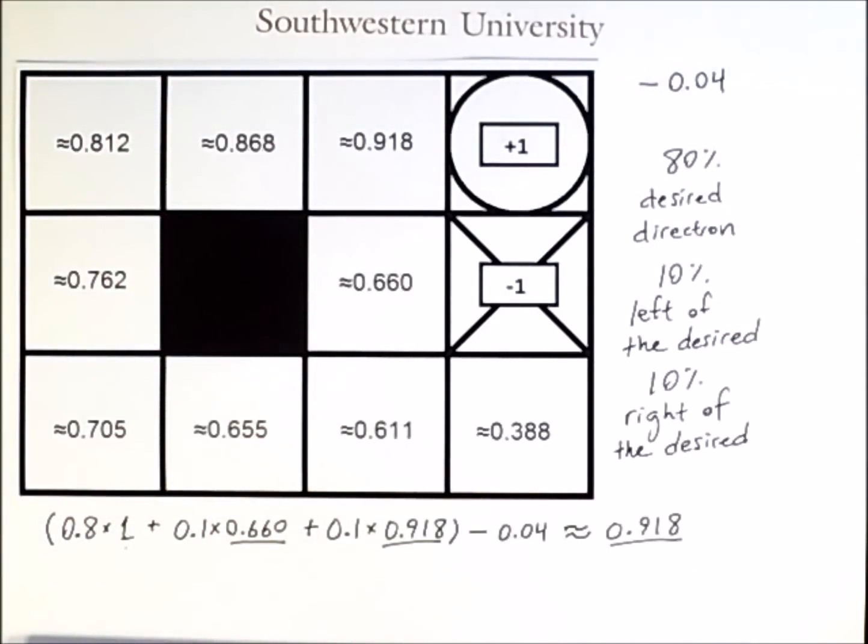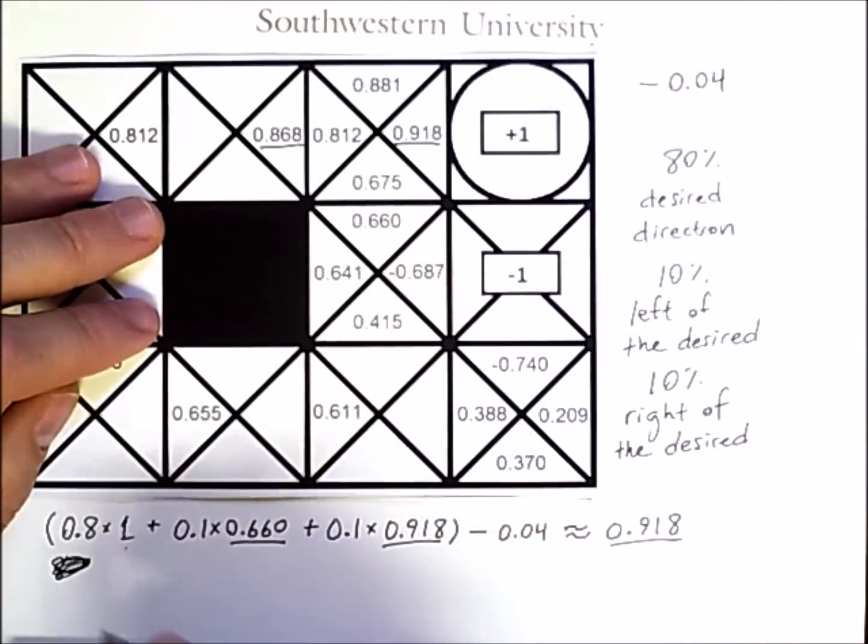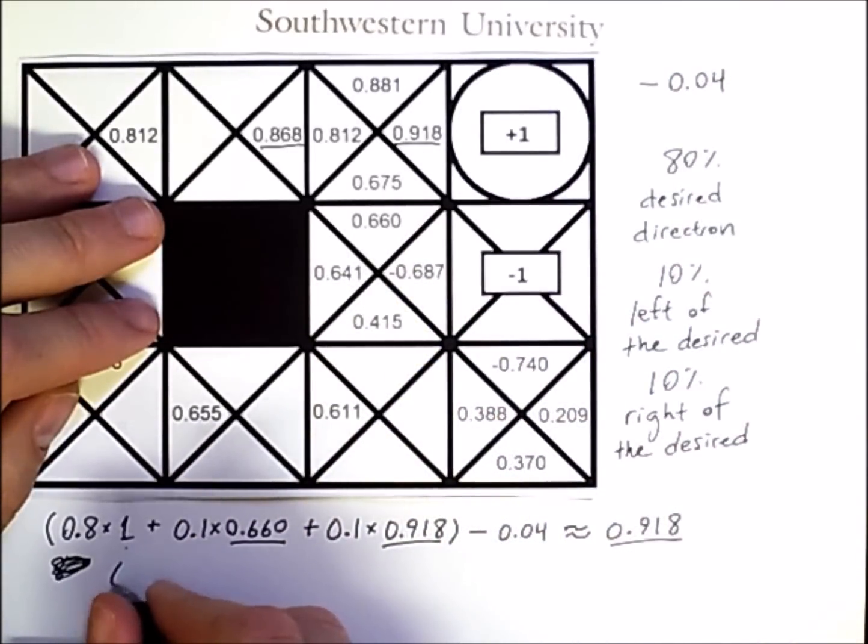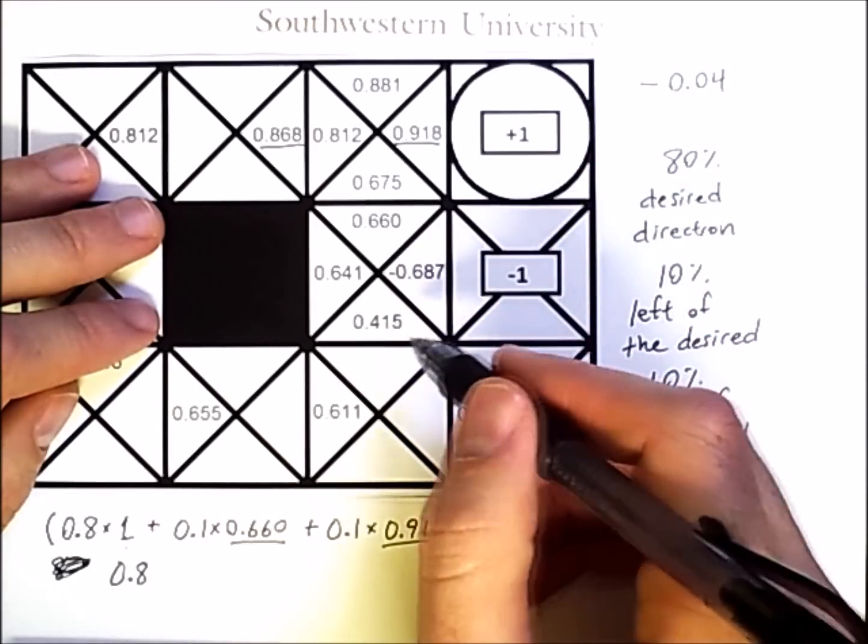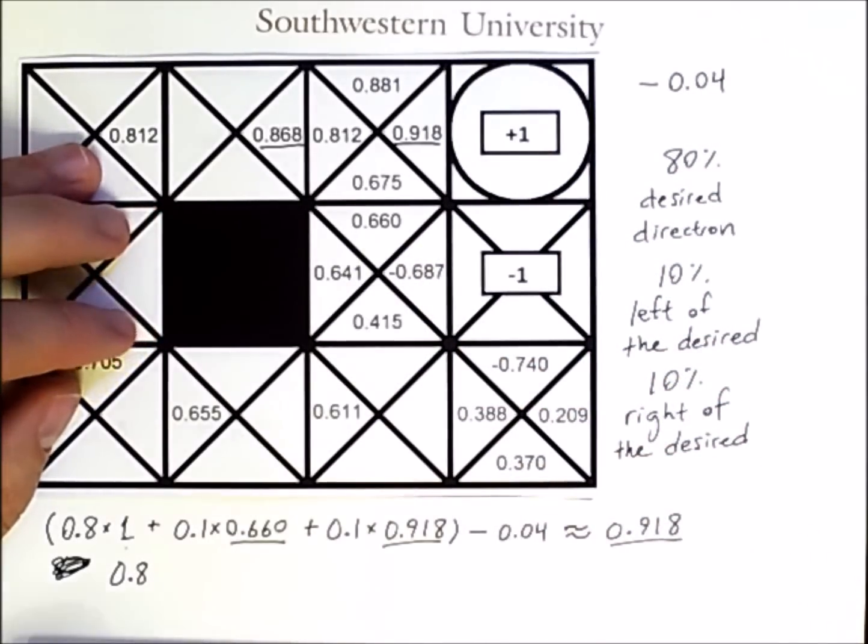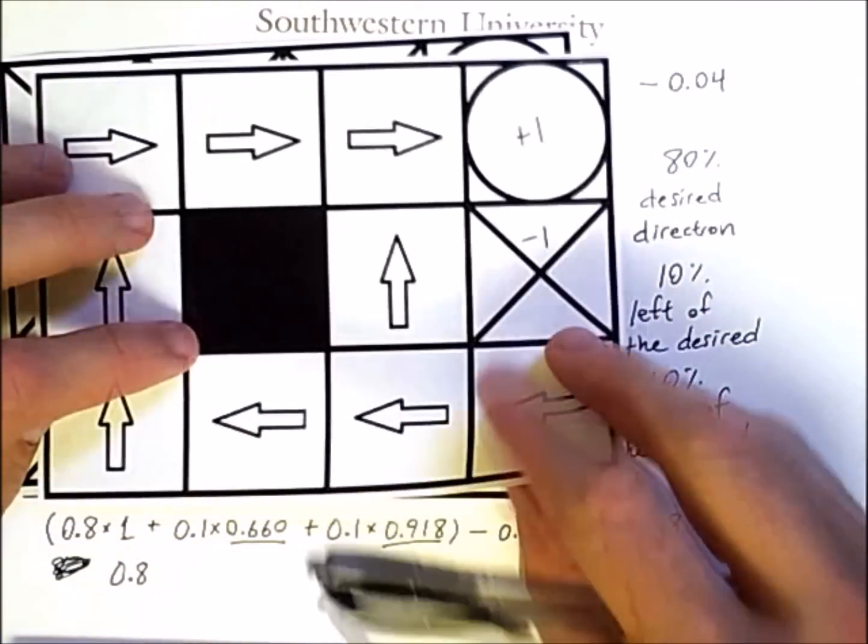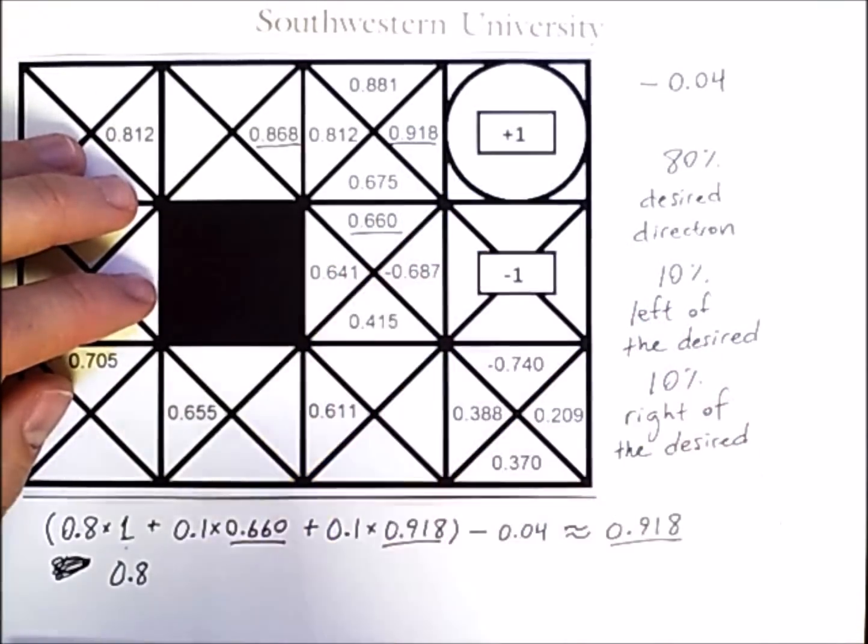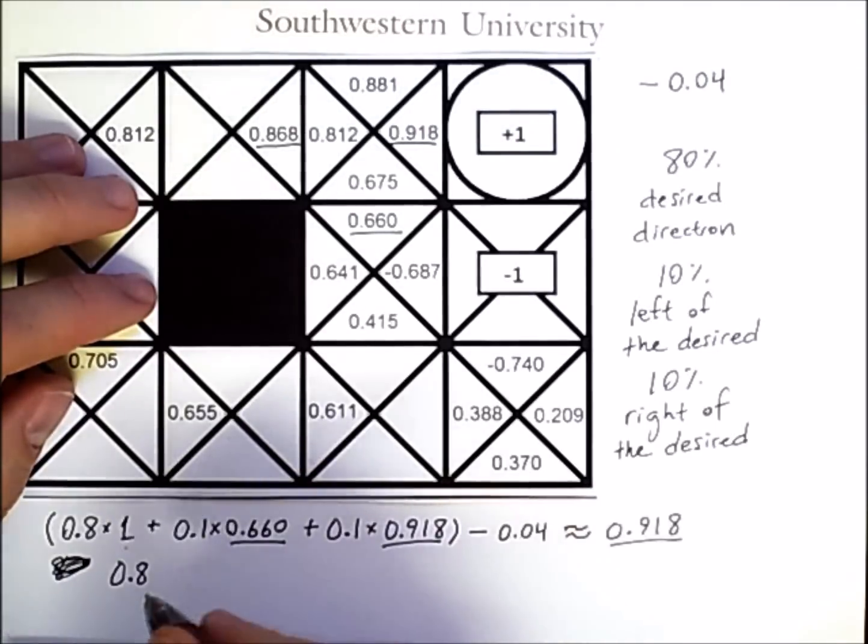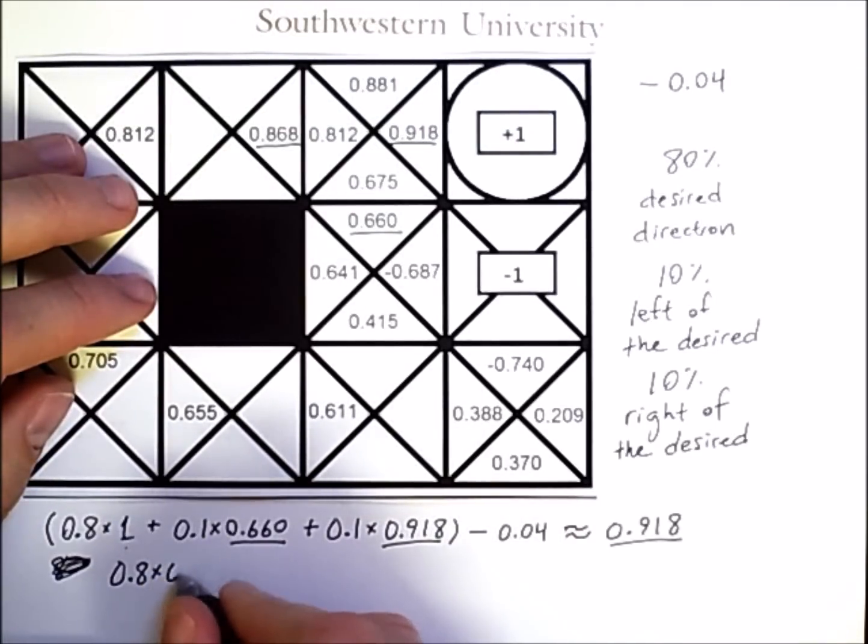So we can demonstrate that like so. If I choose to move down, which will happen successfully 80% of the time, then I'll wind up in a state where the optimal action is to move up, which has this value.